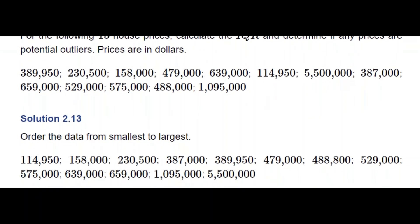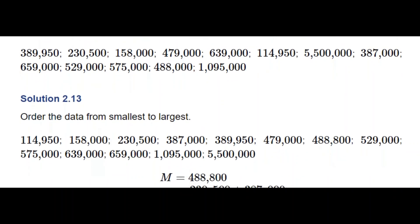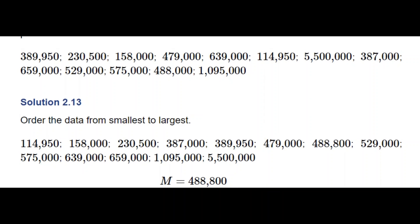After organizing the data, the smallest price is $114,950 and the largest is $5,500,000. There are 13 numbers — an odd number — so the median is the 7th number, which is $488,800. So we calculate the median to be $488,800.